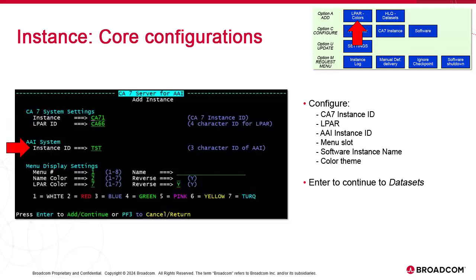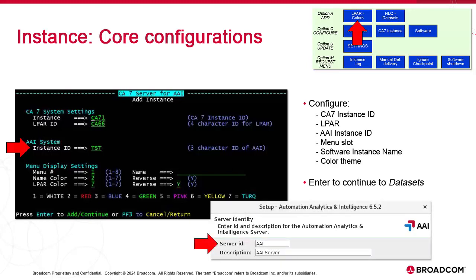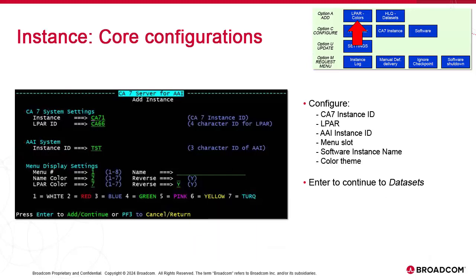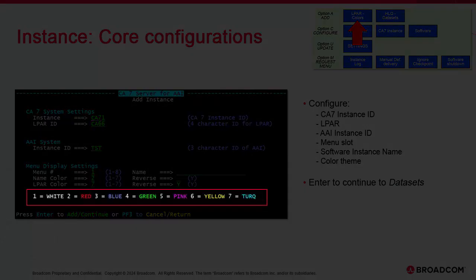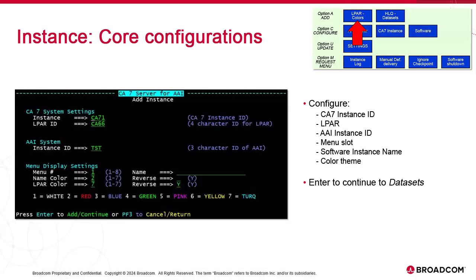Then we add the AAI system ID. Assuming you have experience installing AAI on a Unix or Windows system, you'll remember this three-character ID in the wizard — we enter it here. Both IDs are important. They're going to define the naming convention of the instance members, so it's important to get them right. We can change the menu slots, we name our instance — this is your decision, although we recommend establishing a naming convention early to maintain consistency throughout the system. We then have the option of setting a color theme to our environment for the instance name, the L part, and so forth. We press Enter to continue.